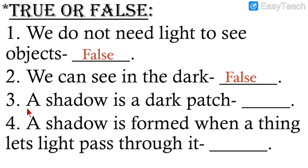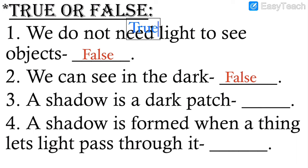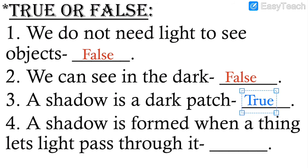Number three: A shadow is a dark patch — yes, this is correct and true. A shadow is a dark patch which is formed on the ground or on the wall.